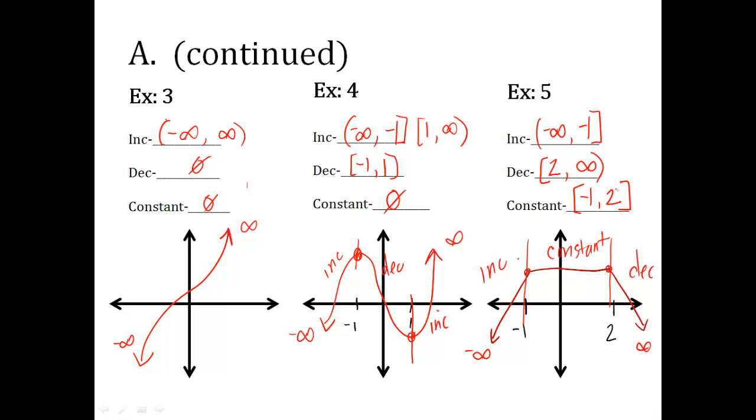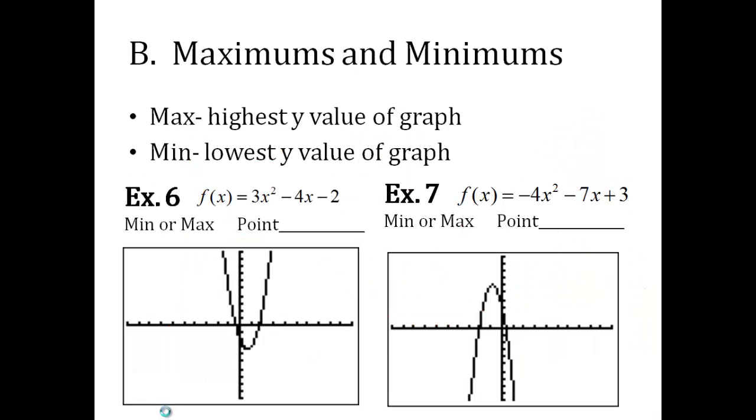That's all there is to identifying the intervals as increasing, decreasing, or constant. Let me know if you have questions. Maximum is the highest point, or the xy of the graph. The minimum is the lowest point, or the xy of the graph. The minimum is the lowest point, the xy coordinate of that graph. That should make some sense to you.